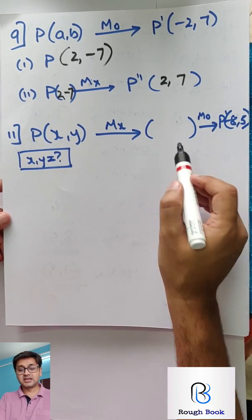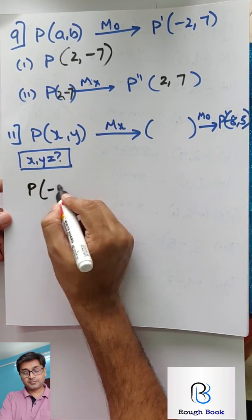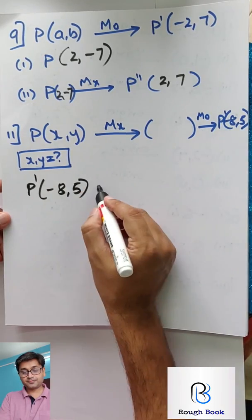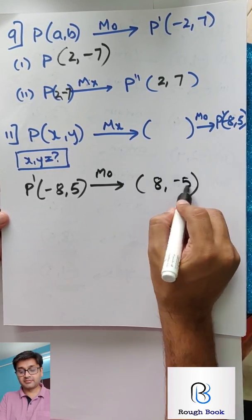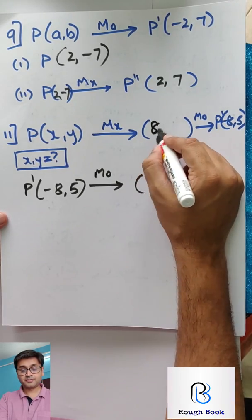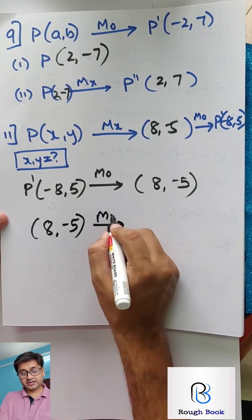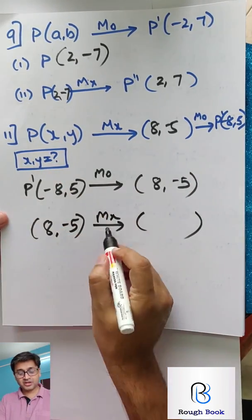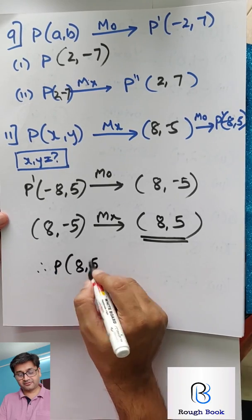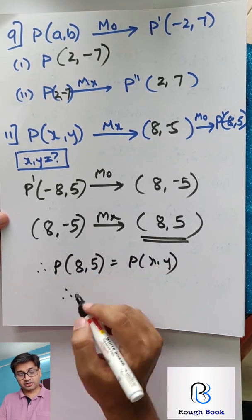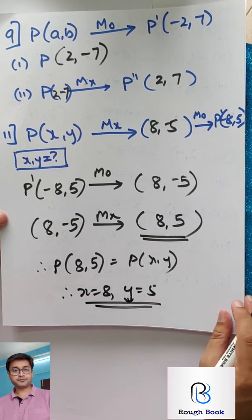P X Y changing in X axis, reaching somewhere, changing in origin, reaching somewhere. So now you have got to go reverse. So P minus 8, 5 is P dash. M of O, what will be origin? Both will change. So 8 by minus 5. And now this 8 by minus 5 reflecting in X axis, you have to go reverse. So X axis, Y will change. So 8 by 5. So therefore you can say point P is 8 by 5, which is equal to X comma Y. So therefore X is 8 and Y is 5. Easy? Very easy.